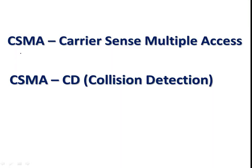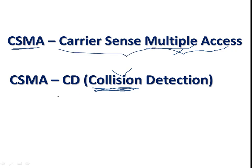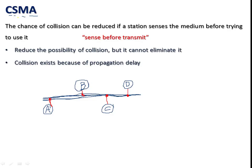We are going to see the topic CSMA, that is Carrier Sense Multiple Access. Multiple access is the method implemented in computer networks when multiple stations are connected and want to transmit a signal through a common medium, to avoid collision. We will first see what is CSMA, then the technique of collision detection.